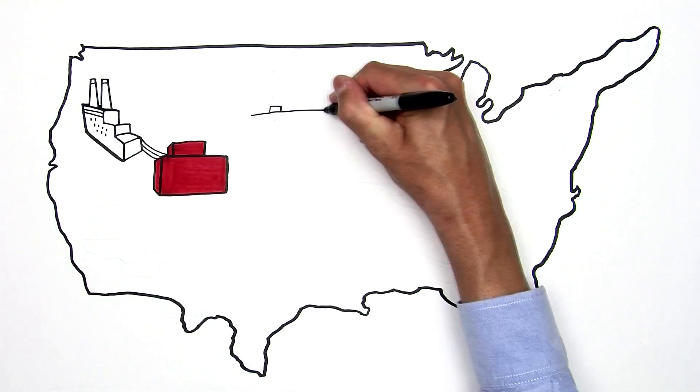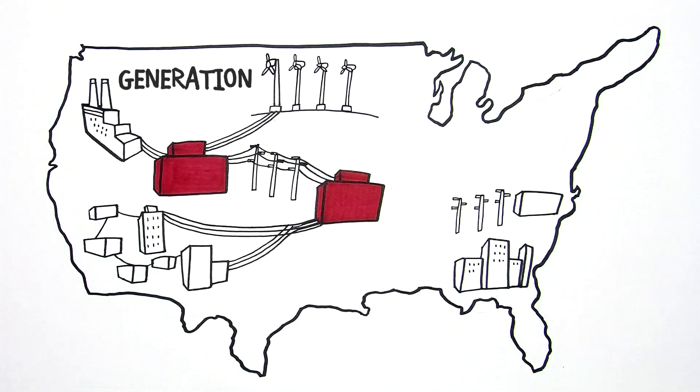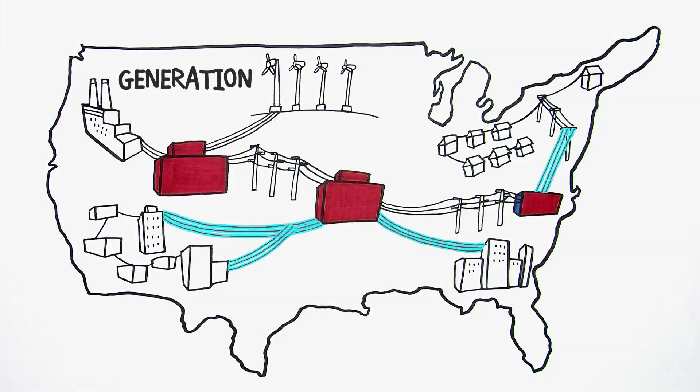America's electric system includes power plants that generate electricity, distribution lines that bring electricity directly to our homes and businesses, and in between, a transmission network that moves the electricity from where it's generated to communities where it's used.